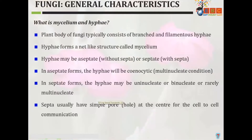What is mycelium and what are hyphae? The plant body of fungi typically consists of branched, filamentous hyphae. The hyphae form a net-like structure called mycelium — more than one hypha come together to make this net-like structure. Hypha may be aseptate, without septa, or septate, with septa. In aseptate form, hypha will be coenocytic, which is a multi-nucleated condition.